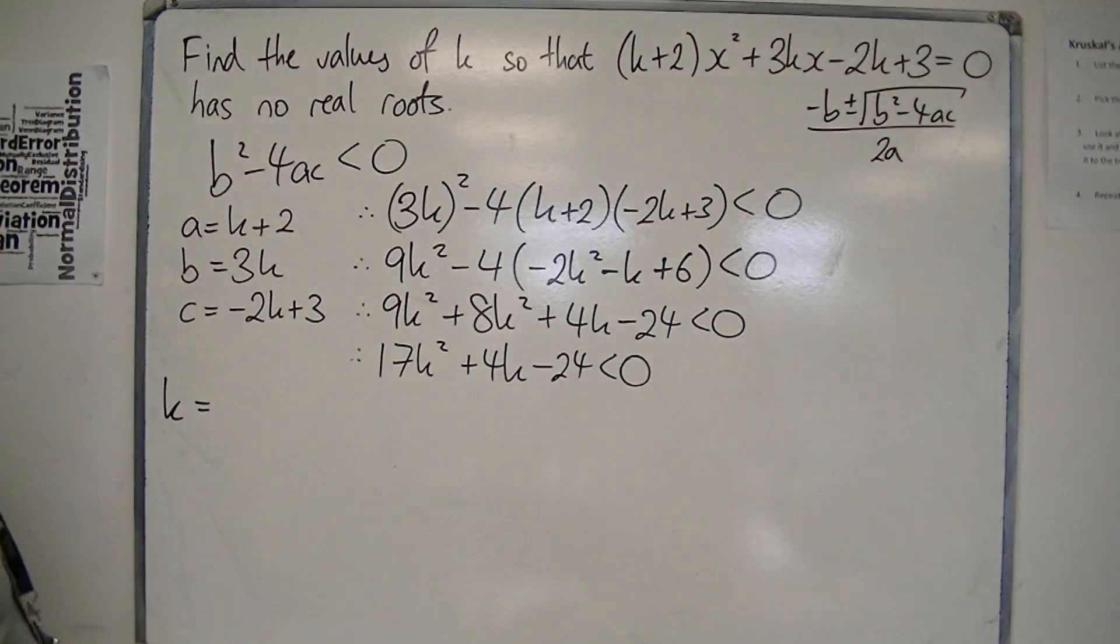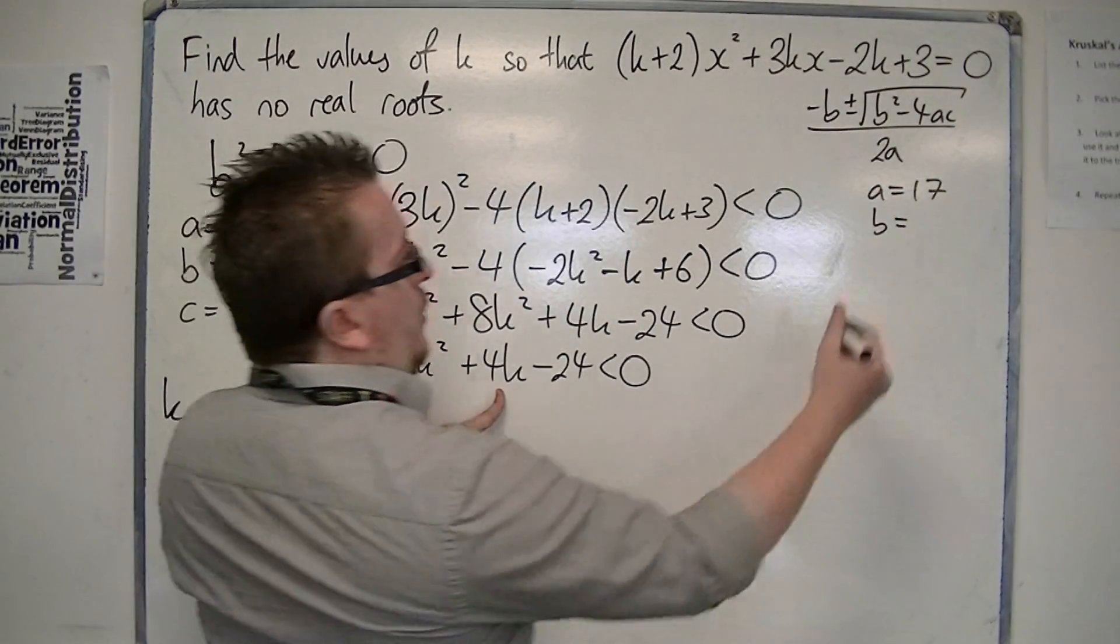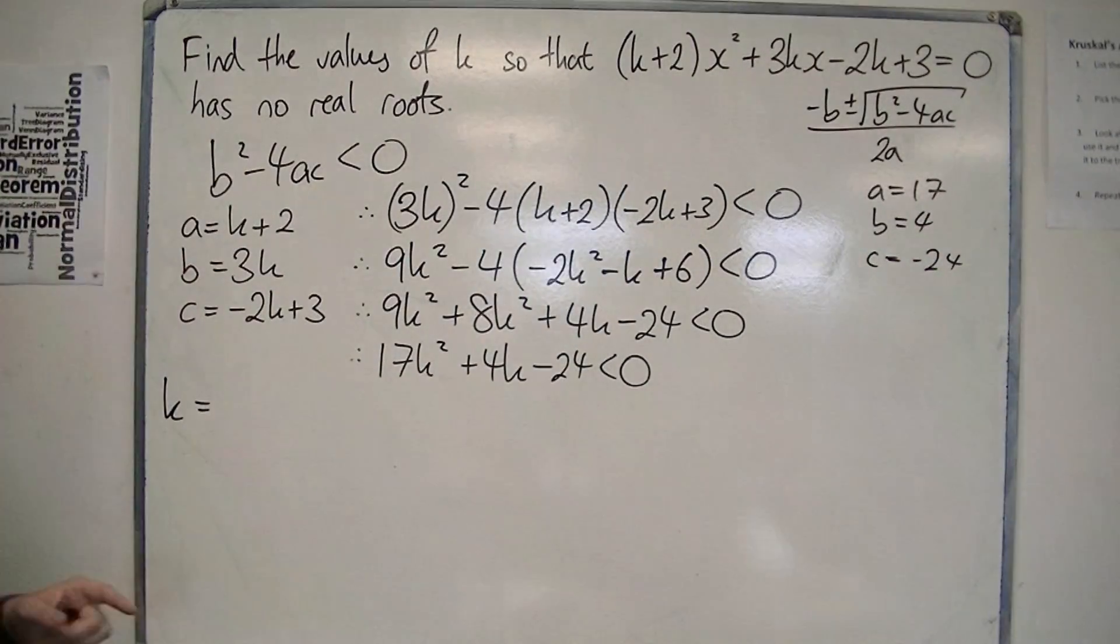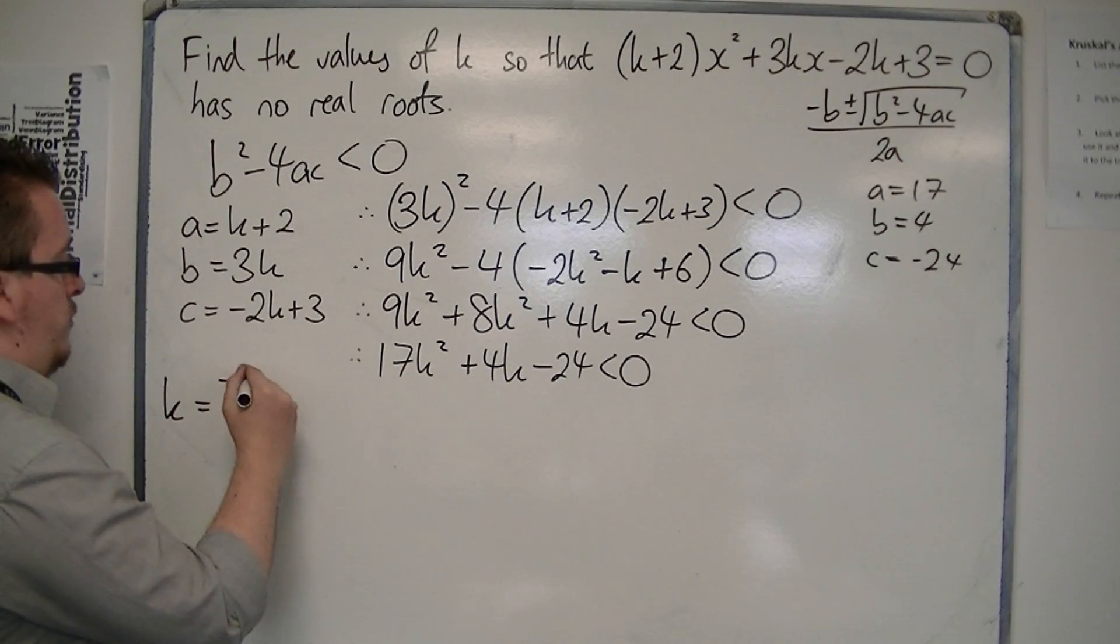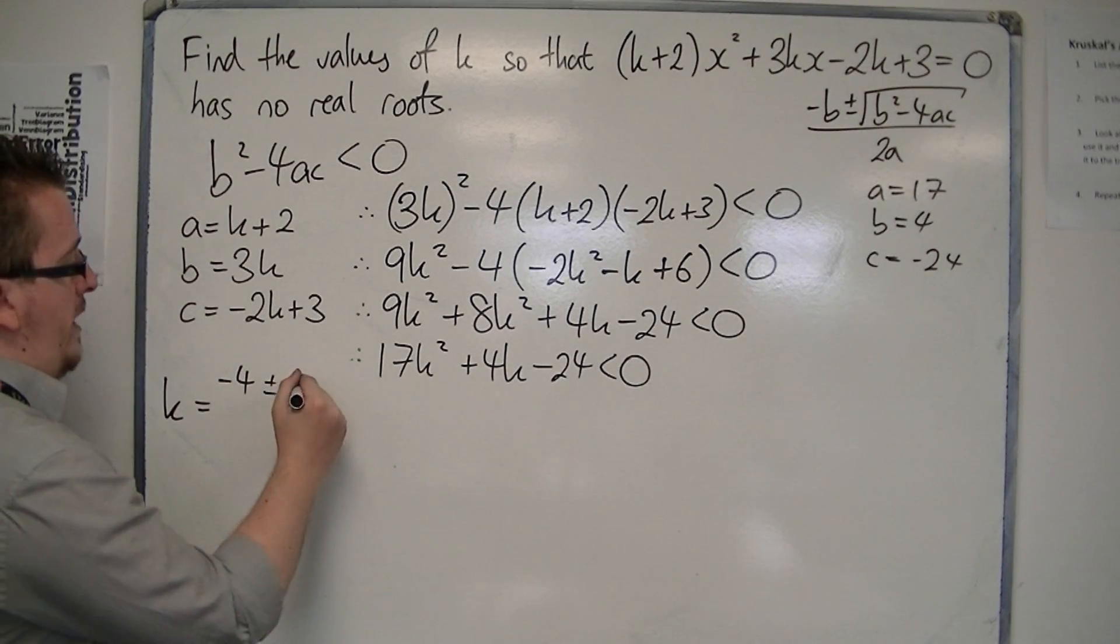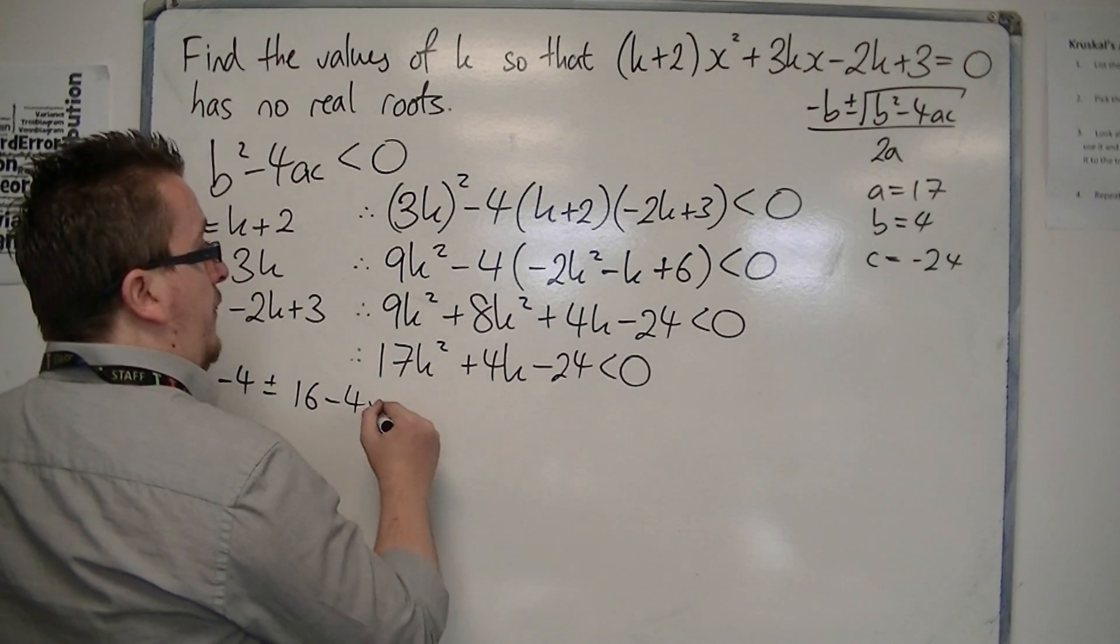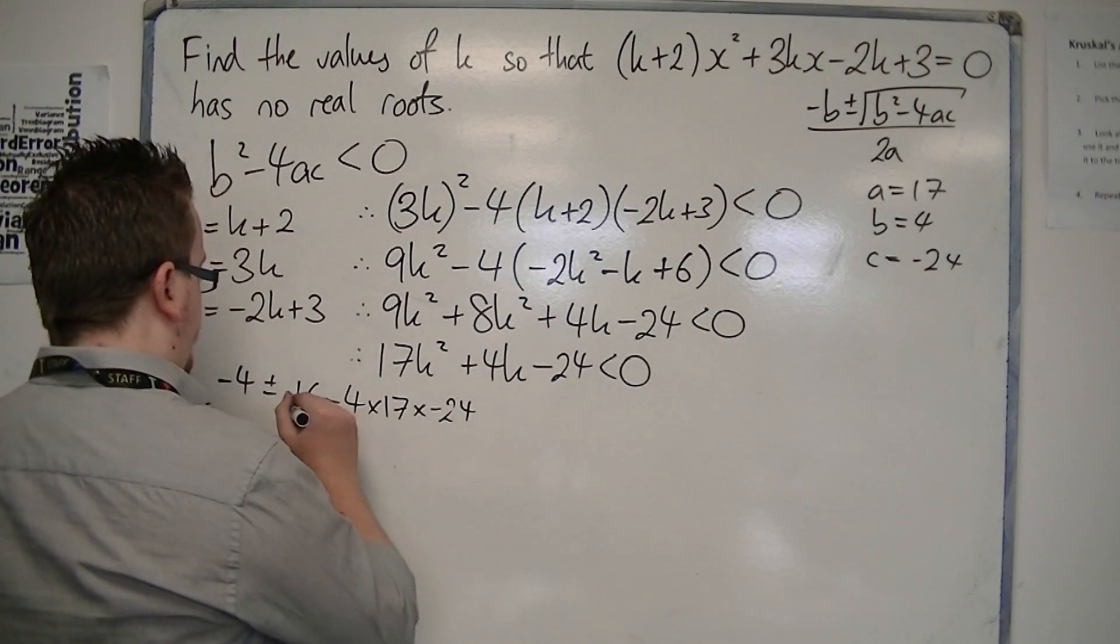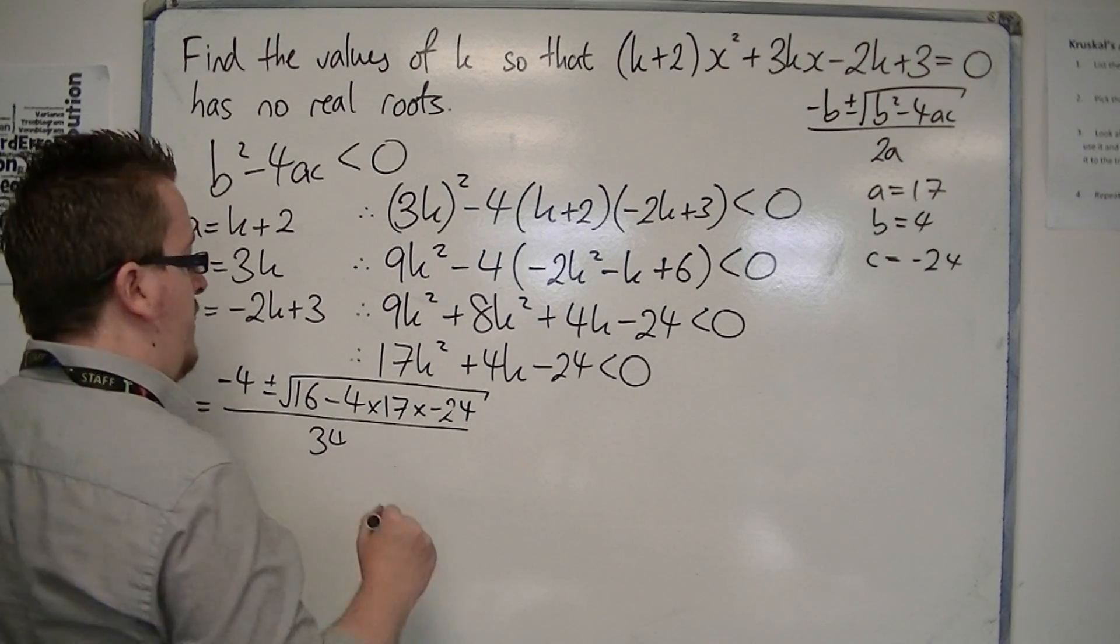So a is 17, b is 4, and c is -24 here. So we've got b², so we've got -b, so that's -4, plus or minus b², which is 16, take away 4 times a times c, all over 2a, so all over 34.